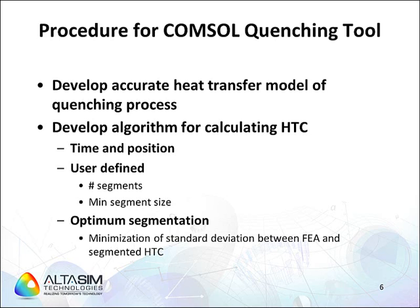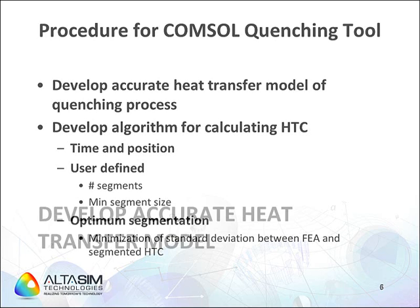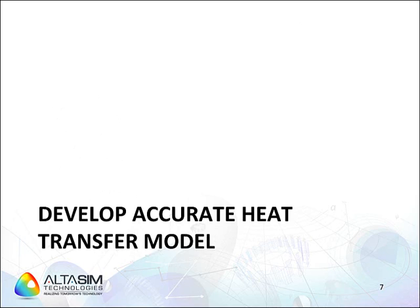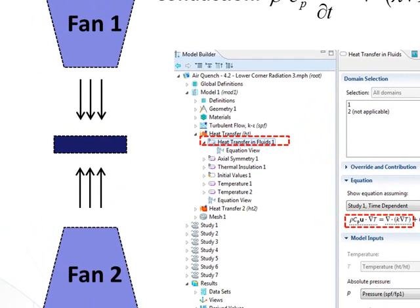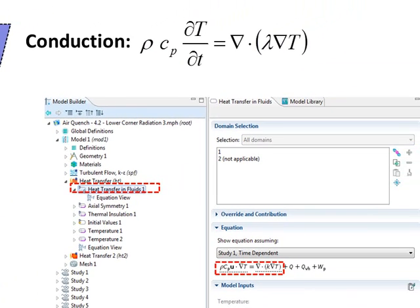The first step in this process is to develop an accurate heat transfer model. In the next several slides, we will review the key features of COMSOL Multiphysics that enable analysis of the quenching process. COMSOL includes the ability to model conduction, convection, and radiation. The experimental setup being modeled is a cylindrical sample called a pancake or puck between two fans. For this transient case, the conduction will be driven by the density, specific heat, and thermal conductivity of the air. In addition, you see the temporal and spatial gradients of the temperature, T, in the equations.